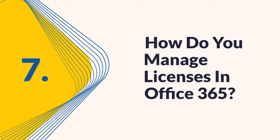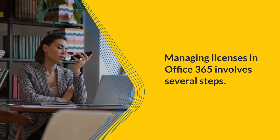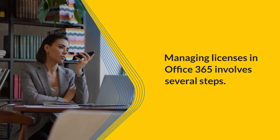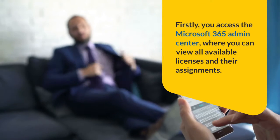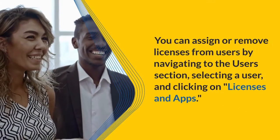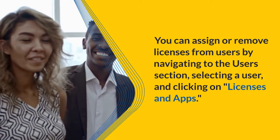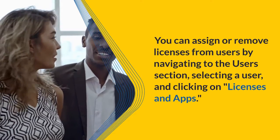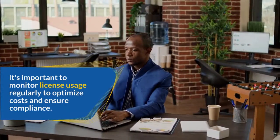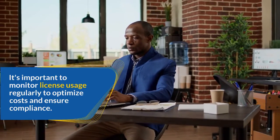How do you manage licenses in Office 365? Managing licenses in Office 365 involves several steps. You access the Microsoft 365 Admin Center, where you can view all available licenses and their assignments. You can assign or remove licenses from users by navigating to the Users section, selecting a user, and clicking on Licenses and Apps. It's important to monitor license usage regularly to optimize costs and ensure compliance.